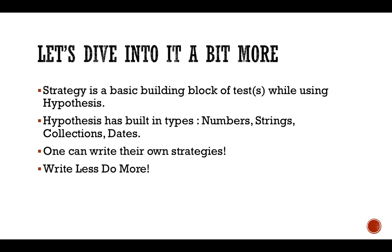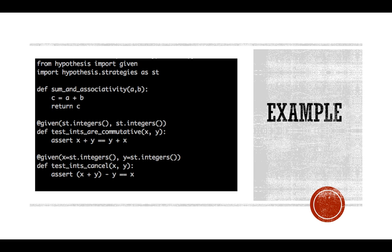Let's dive a bit more into Hypothesis 101. A strategy is basically a recipe for random data — if you want to generate email IDs, phone numbers, or any other data for your test cases, you can do that using a strategy. Hypothesis has built-in types for strategies: numbers, strings, collections, and dates. You can also write your own strategy. The beauty of strategies is you write less and do more — you can define one single strategy and reuse it again and again, much like fixtures.